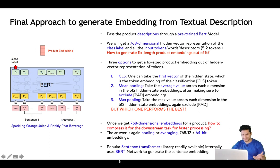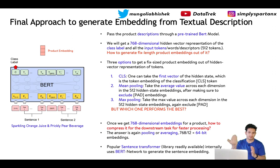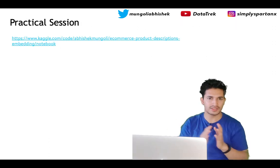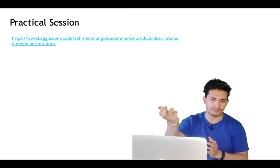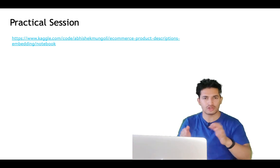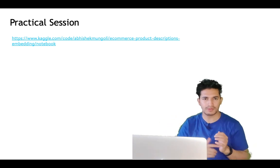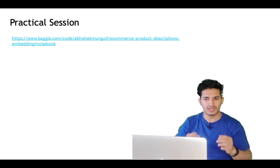We could have simply used the Sentence Transformers library, but we went through the whole process of understanding BERT and what that library does under the hood. We wanted to use a pre-trained BERT model to generate embeddings ourselves. The code will be made available in the description section, along with the video on numerical data embeddings and upcoming videos on knowledge distillation and attention.